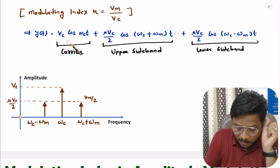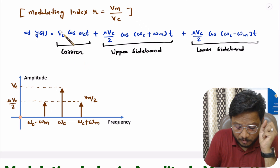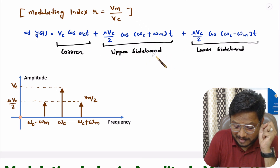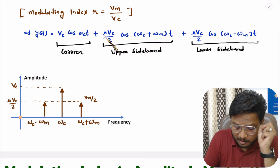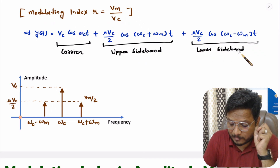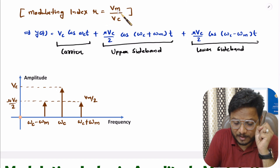With an AM signal, we have three frequency components. The first is the carrier signal, having amplitude VC and frequency ωC. The second is the upper sideband, having amplitude μVC/2 and frequency ωC + ωM. The third is the lower sideband, having amplitude μVC/2 and frequency ωC − ωM, where μ is the modulating index, that is VM/VC.